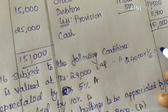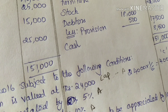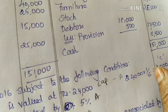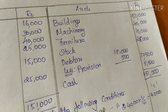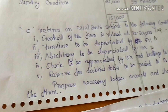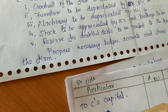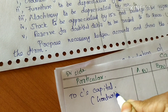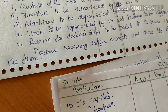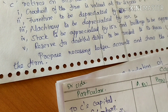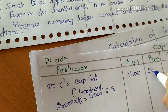C's share of goodwill: 24,000 into 1/6 = 4,000. This goodwill amount is shared by A and B in their new profit sharing ratio of 2:3. So A's share is 1,600 and B's share is 2,400. A and B debit their capital accounts for 1,600 and 2,400 respectively.